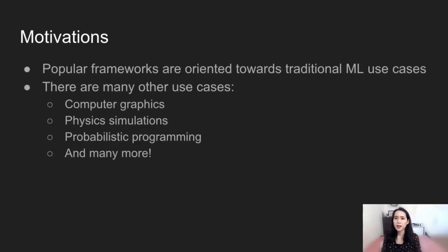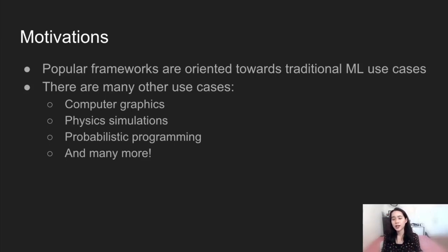Of course, there are many popular frameworks that do provide differentiation, such as PyTorch, TensorFlow, and JAX. However, these frameworks are heavily geared towards traditional machine learning models, and there are many use cases that are not well supported, such as computer graphics, physics simulations, and probabilistic programming.